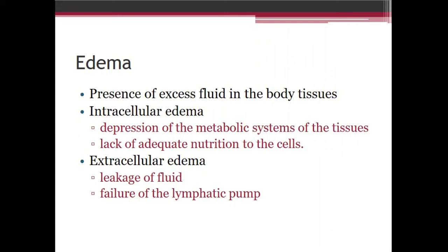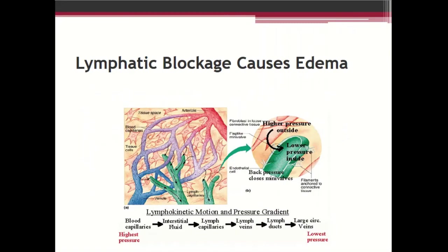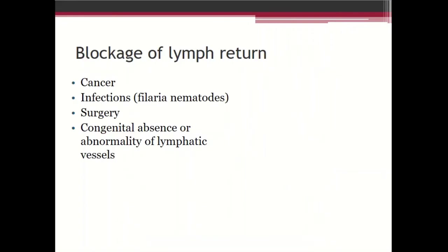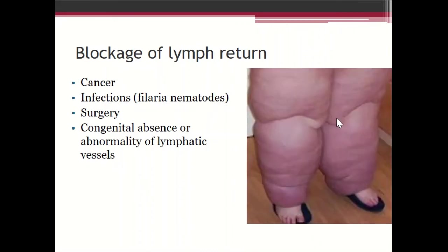The second major cause of extracellular edema is failure of the lymphatic pump. The lymphatics carry excessive fluid from the interstitial spaces back toward the heart. Whenever there is failure of the lymphatic pump or blockade of lymph return, excessive fluid accumulates in the interstitium. Factors causing blockade of lymph return include cancer, infections such as filaria nematodes — which can cause massive edema — surgery, and congenital absence or abnormality of the lymphatic vessels.